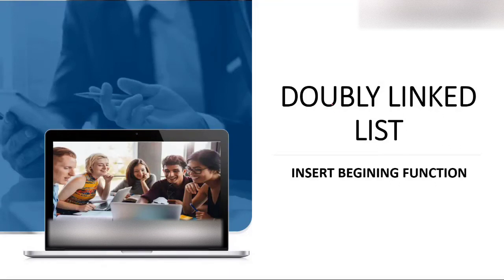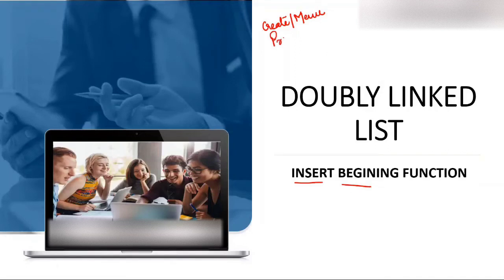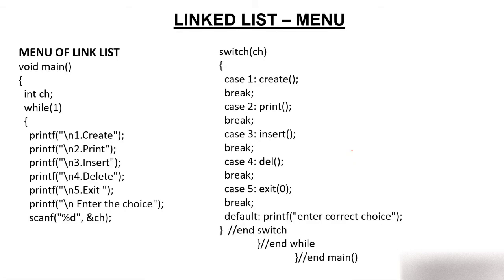Today the topic of discussion is double linked list — we will study how to insert a node at the beginning. You already have a double linked list and you have to insert a node at the starting point. Prior to this we have understood how to create a double linked list, how to use a menu program, and how to print elements of the linked list. Now we will discuss how to insert a node on an already created linked list at the beginning.